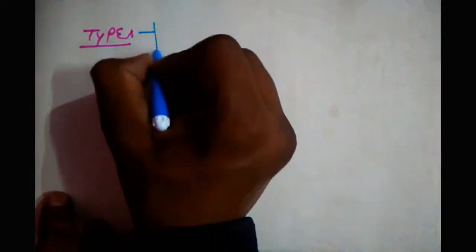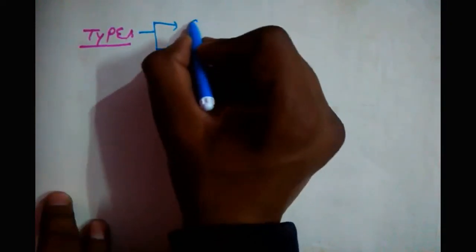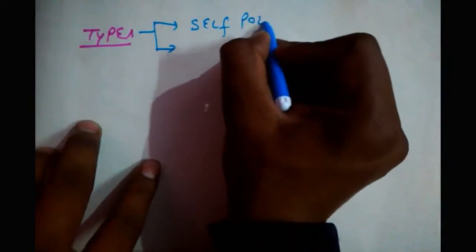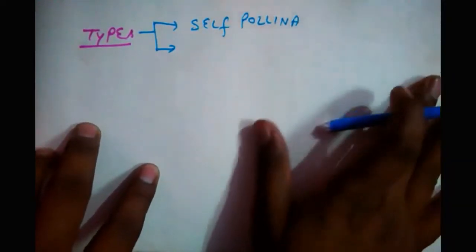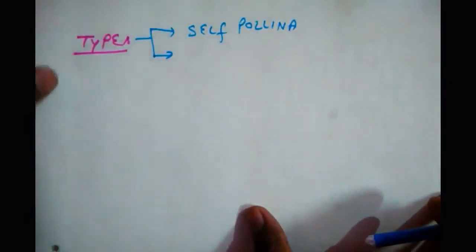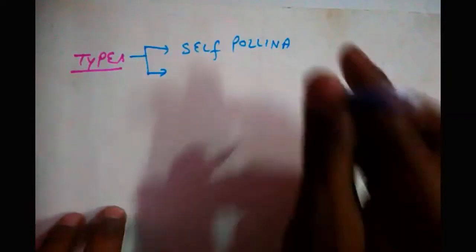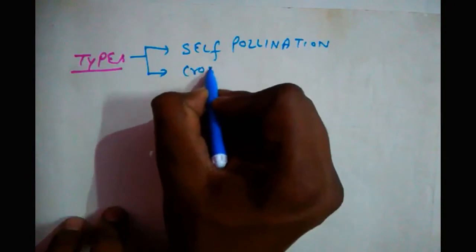Let's discover the various methods and types of pollination. There are two types of pollination: one is self-pollination and another one is cross-pollination.